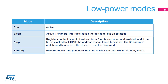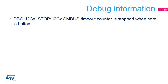The I2C peripheral is active in run and sleep modes. In stop mode, the peripheral clocks are off and the registers' content is kept. In standby mode, the peripheral is powered down and must be reinitialized after exiting standby mode. For each I2C peripheral, a debug bit is available in the MCU debug component that can be used to stop the SMBus timeout counter when the core is halted.